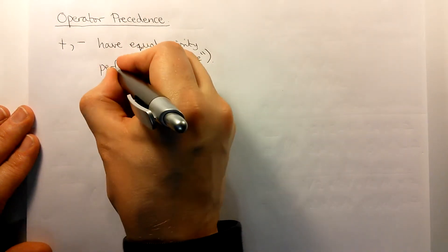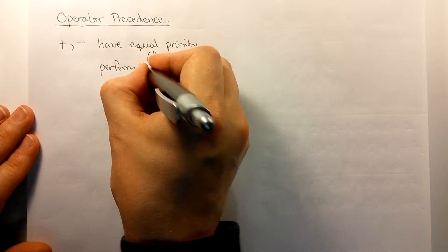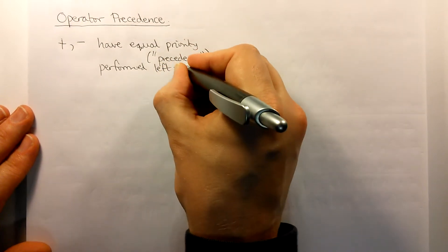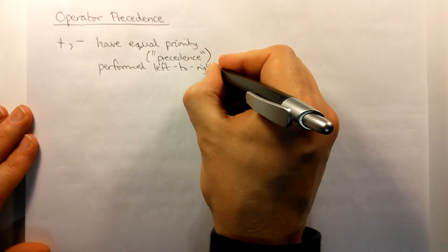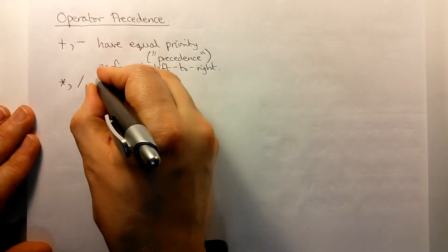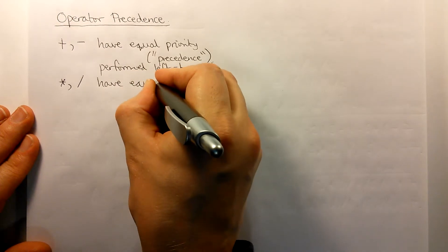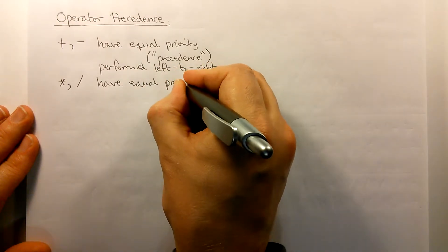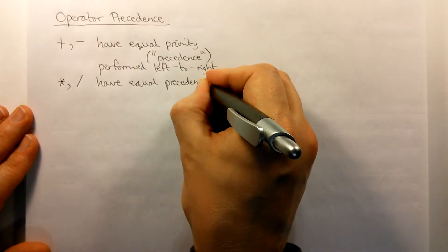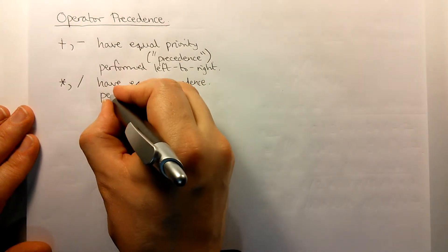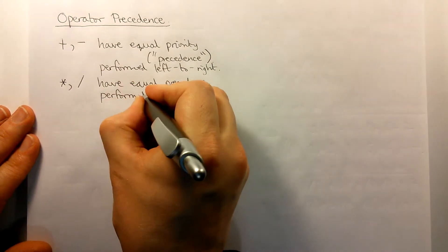So these are simply performed left to right. Similarly, multiplication and division have equal precedence. And these are also performed left to right.